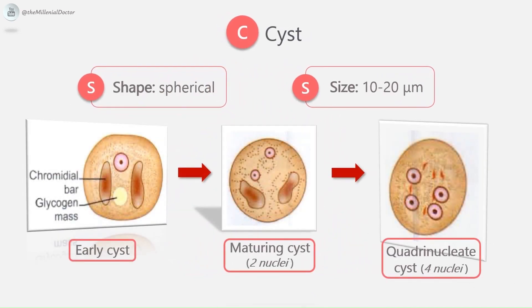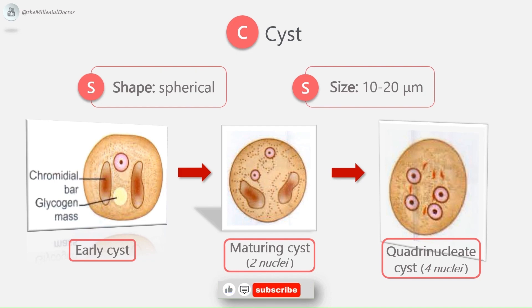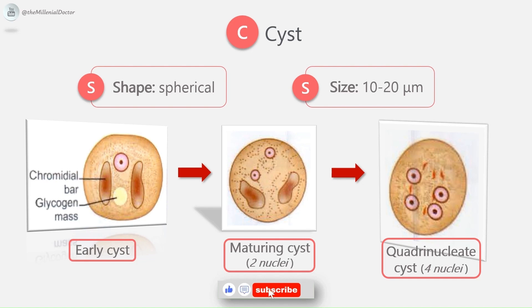Next is the cyst stage. The cyst is spherical, about 10–20 micrometers in size. The early cyst contains a single nucleus, a mass of glycogen, and one to four chromatoid bodies or chromidial bars, which are cigar-shaped refractile rods with rounded ends. These stain with hematoxylin like chromatin. As the cyst matures, the glycogen mass and chromidial bars disappear, and the nucleus undergoes two successive mitotic divisions to form two and then four nuclei. The mature cyst is thus quadrinucleate.